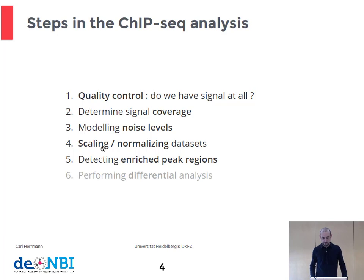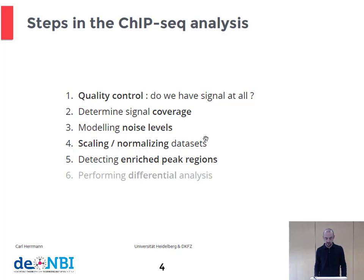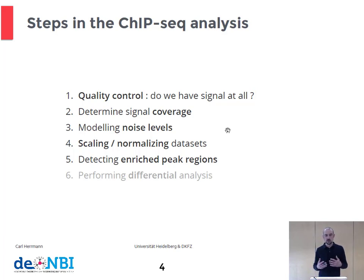I have listed the different steps in a typical ChIP-seq analysis. The first step is quality control to check whether the assay has worked as expected. The second step is to determine signal coverage — going from reads to a signal track that can be displayed in a genome browser. A very central point is to model the noise level, then subtract the noise from the signal to get normalized data sets, and finally determine the significantly enriched regions, which we call peak regions. A further step could be differential analysis of ChIP-seq comparing two conditions, but I will not address that in this lecture.